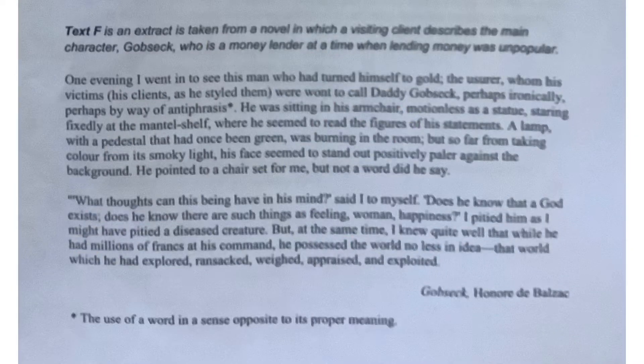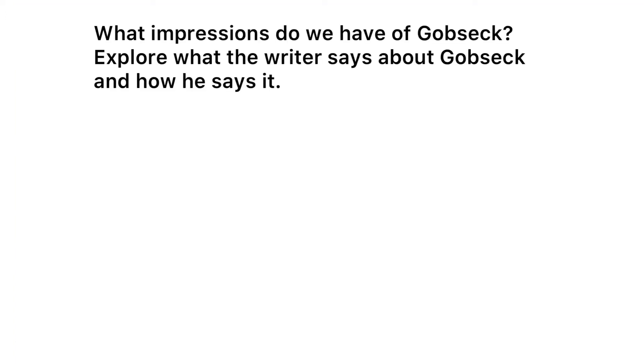The statue also suggests, as gold does, the human changing into some inanimate object. And inanimate means inhuman and therefore unemotional — without those important emotions such as love, care, and respect. Now I think it's time we have a look at the real text. Taking these words out of context does skew meanings, so let's have a look. What impressions do we get of Gobsek? Explore what the writer says about Gobsek and how he says it. I'll read the extract and then we'll have a discussion.